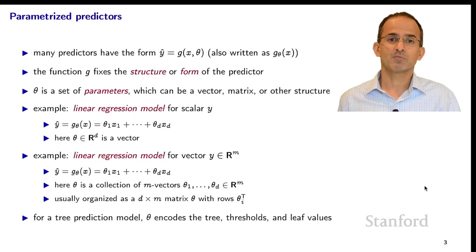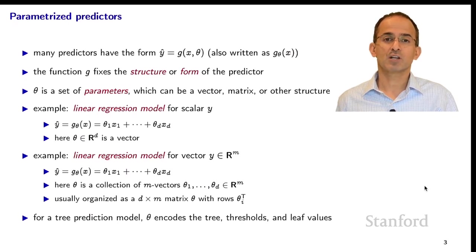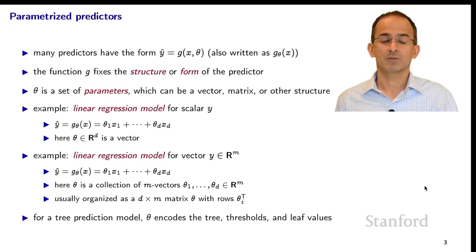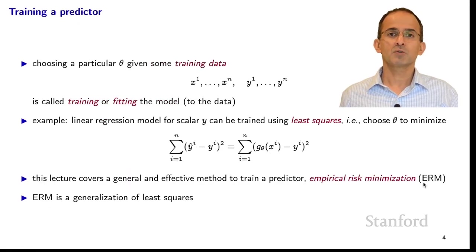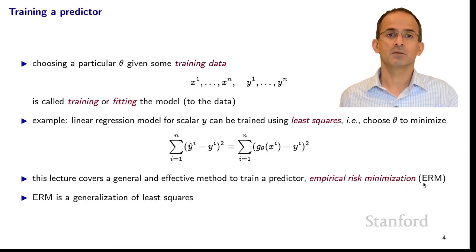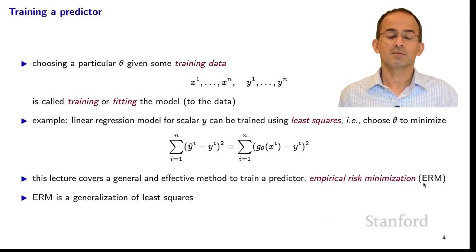We might have other types of predictors as well. For a tree prediction model, theta would encode the tree — it would tell us the thresholds at each vertex and the leaf values. We choose which particular theta to use based on training data: n data pairs (x_i, y_i) for i equals 1 up to n. That's the training data, and we use it to fit the model.